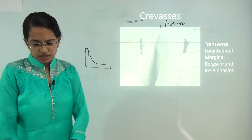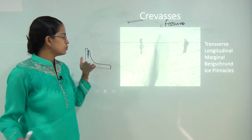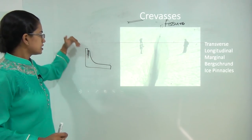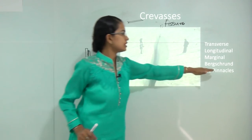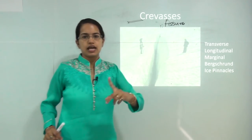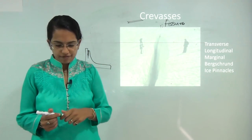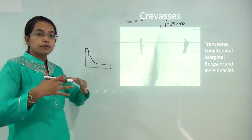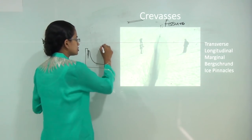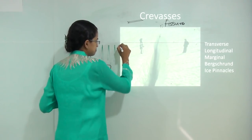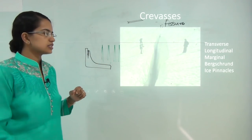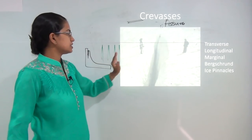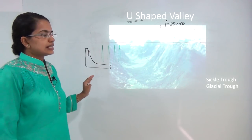The bergschrund is a region between the moving glacier and the standing wall — the glacier moves in one direction and the wall stands still, and the crevasse created between the two is known as a bergschrund. Finally, ice pinnacles are steep structures seen in a topography where they appear in a huge group — numerous tiny needle-shaped structures seen in a series.